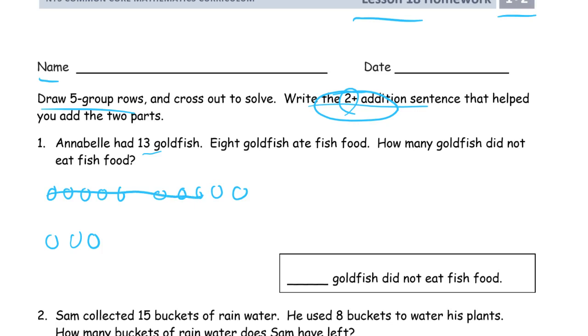Cross out 8. There's our 2. There's our 3. And so our addition sentence is 2 plus 3 equals 5. There's our 2 plus addition sentence. That helps us add these 2 parts back together to see how many are left. 5 goldfish did not eat fish food.